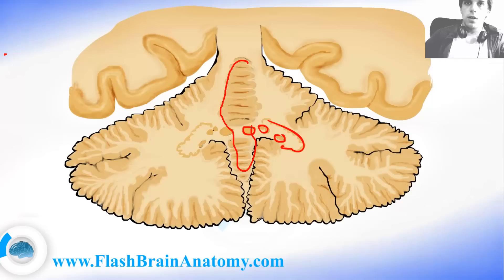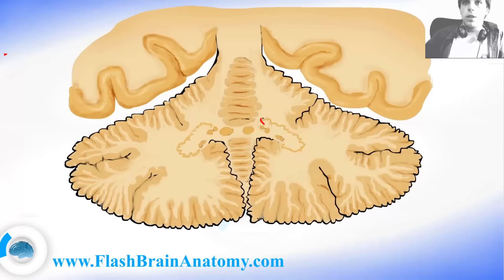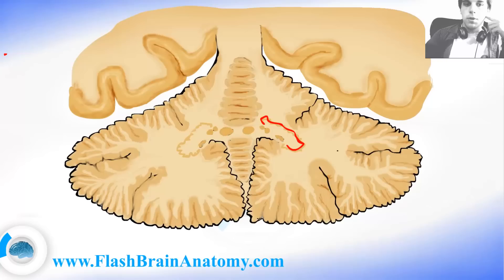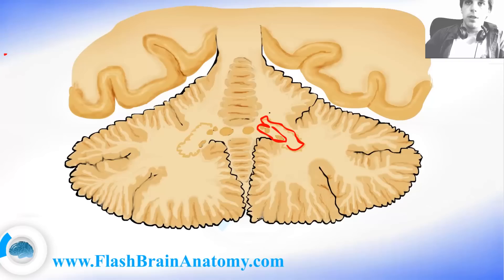This was the vermis of the cerebellum, and those were the hemispheres. The dentate nucleus — that is this nucleus over here — receives fibers from the lateral hemispheres. And the interposed nucleus receives the input from the paravermis. The interposed nucleus is the term used for both the emboliform and the globose nucleus. So the interposed nucleus receives fibers from the space around the vermis. And the fastigial nucleus receives input primarily from the vermis.